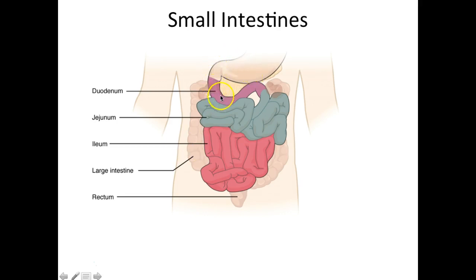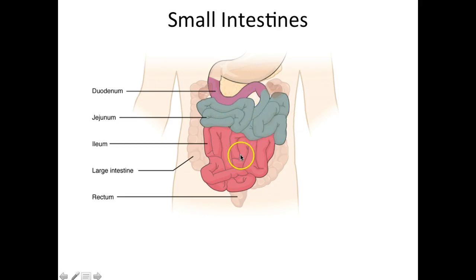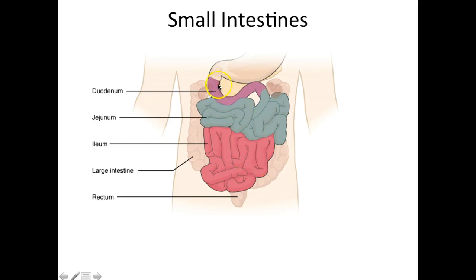The small intestine has three parts. The beginning portion, which attaches to the stomach, is called the duodenum — it's not very long. The second part is called the jejunum. The last part is called the ileum, which you can think of as the part that sits in the iliac portion of your hips. The ileum connects to the large intestine at the very end. So the three parts are: duodenum, jejunum, and ileum.